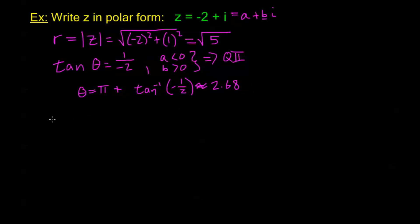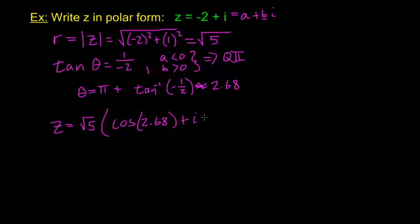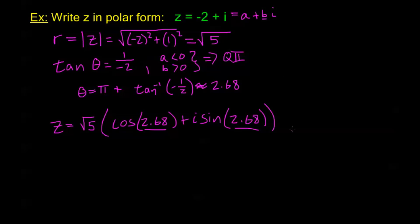So in polar form, z equals √5 times (cosine(2.68) plus i·sine(2.68)). Remember, theta should always be the same in both the cosine and the sine. That's it for this video — in the next video we'll look at multiplication and division of complex numbers in their polar form.